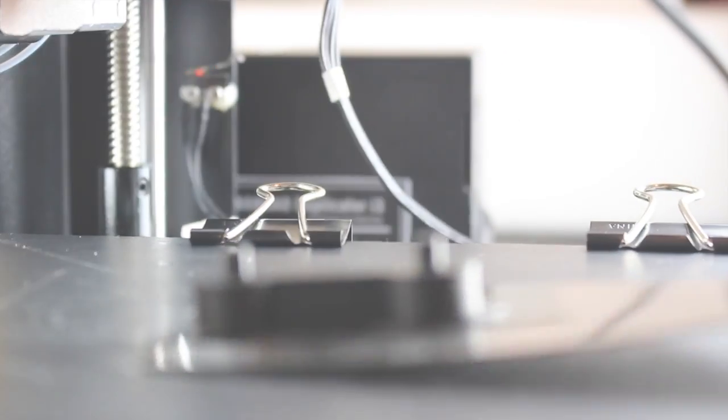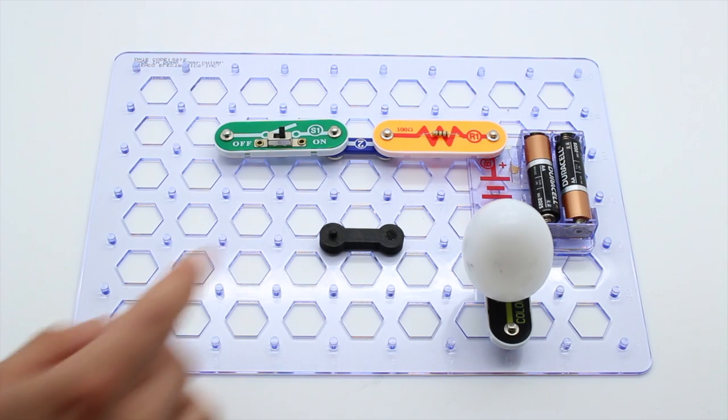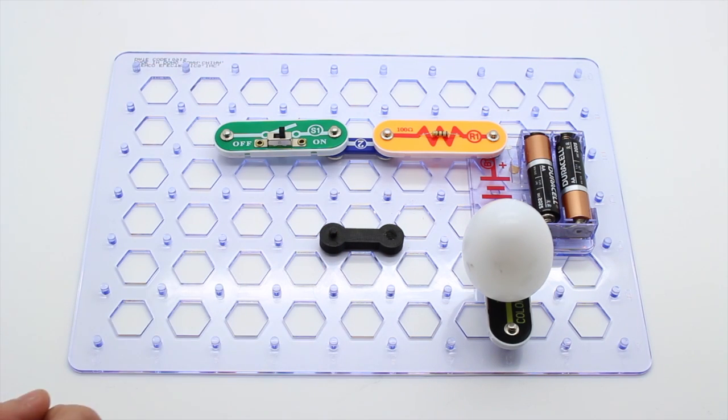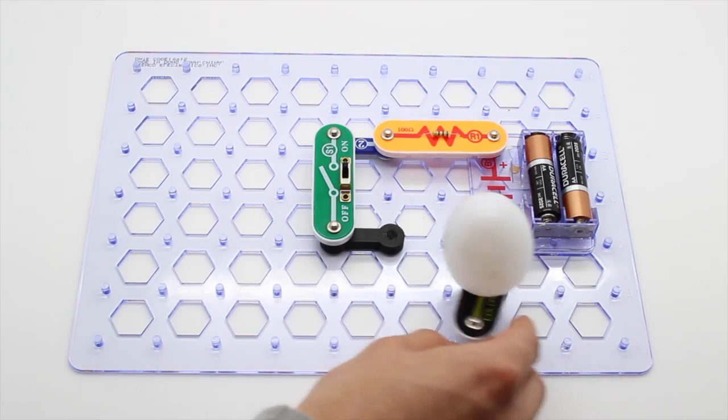Here we have our finished conductive PLA connector. I placed our newly printed connector on the circuit board and connected it to the switch and the LED, which created the circuit using the amplifier and batteries as well.